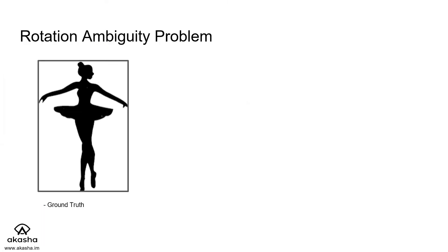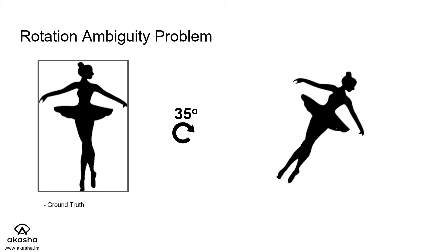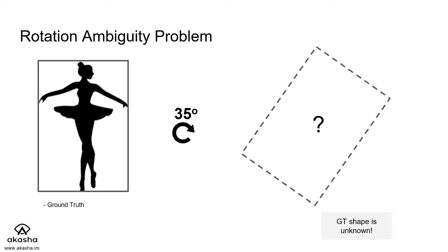The problem stems from the rotational ambiguity of bounding boxes. For instance, if we rotate this scene, we get the following image, and if we know the shape of the object, getting the new bounding box is easy. But in most datasets for object detection, the precise shape of the object is unknown.